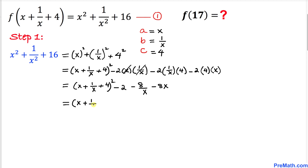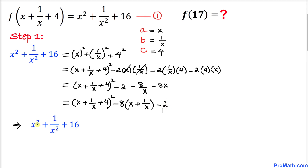So this can be written as (x + 1/x + 4)² and then focusing on the remaining terms, we factor out −8 to get −8·(x + 1/x), and finally −2. Therefore, x² + 1/x² + 16 = (x + 1/x + 4)² − 8·(x + 1/x) − 2. Let's call this equation number 2.